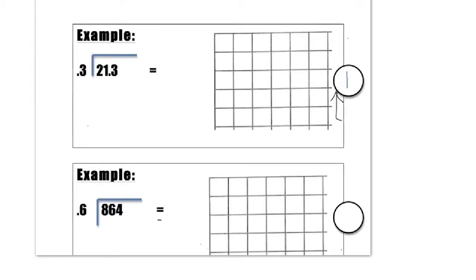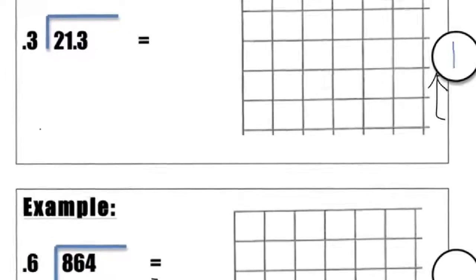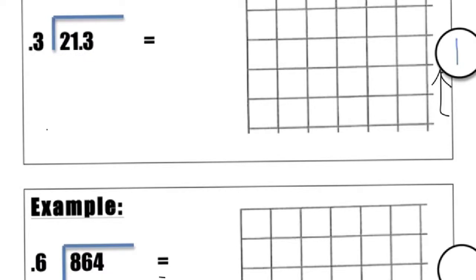In this problem, the problem is 21.3 divided by 0.3. What that's saying is how many groups of 0.3 are there in 21.3? Or, if you were thinking of money, how many groups of 30 cents are there in $21.30? So, let's rewrite the problem. Let me go ahead and zoom in a little bit. Make this a little bit bigger so we've got some more room. And let's write the problem. 21.3 divided by 0.3. I'm going to switch colors here so it's a little bit easier. Now, the first thing that you need to do, and let me go ahead and make this pen just a little bit wider, too.